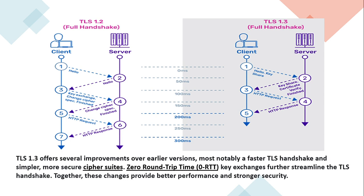In TLS 1.3, many steps are removed and the handshake is much simpler. In the first phase, the client sends a Client Hello along with the key. The server then verifies the key, and in the third step the client directly sends the HTTP request and the server responds with the HTTP response.